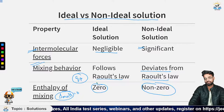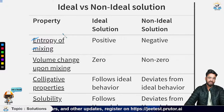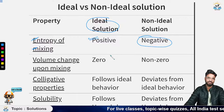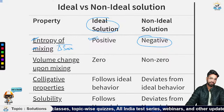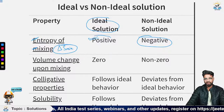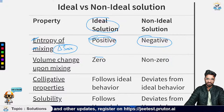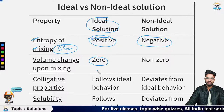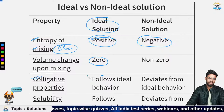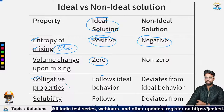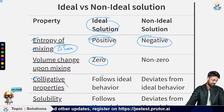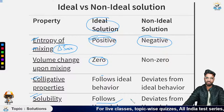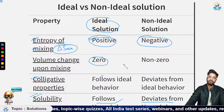For ideal solutions, the entropy of mixing ΔS_mix is positive, the volume change on mixing is zero, and colligative properties behave ideally. For non-ideal solutions, there is a deviation from Henry's Law and no linear plot is observed for solubility.